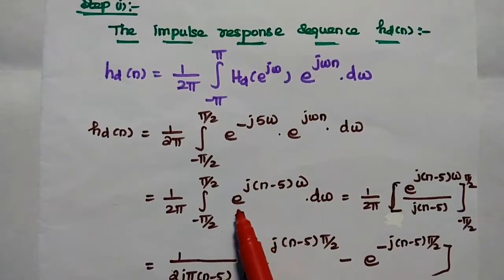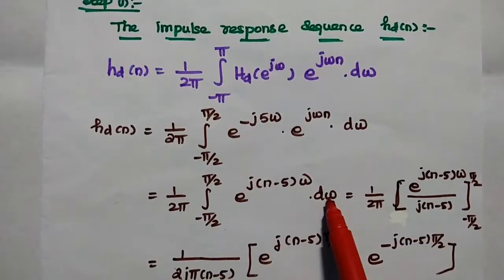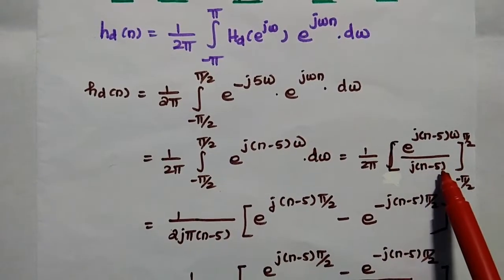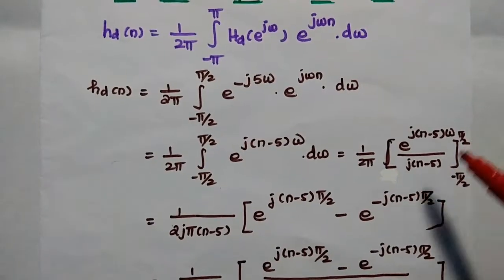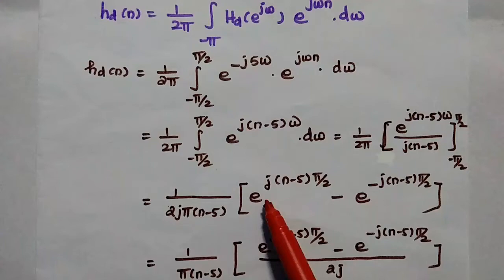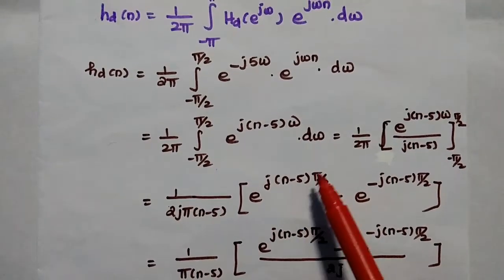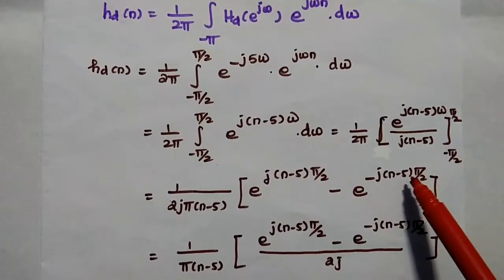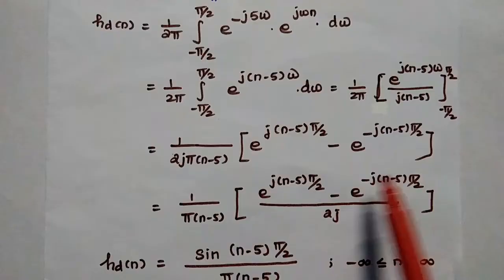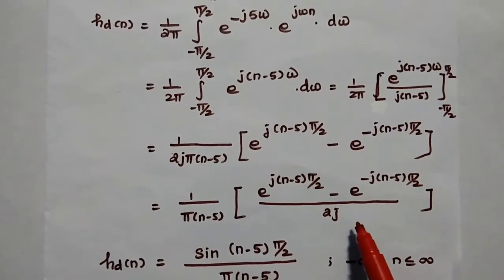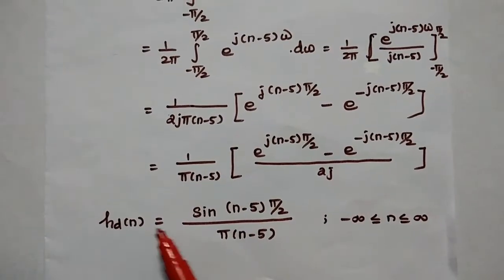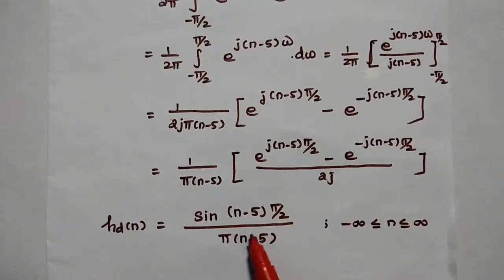Since j and ω terms are the same, we can take them outside. The exponential term becomes e^(j(n−5)ω) dω. Integrating with respect to ω gives (1/2π) × e^(j(n−5)ω) / (j(n−5)), with limits from −π/2 to +π/2. Taking j(n−5) outside gives (1/2j π(n−5)) × [e^(j(n−5)π/2) − e^(−j(n−5)π/2)]. This matches the form (e^(jθ) − e^(−jθ))/2j = sin θ, so hd(n) = sin((n−5)π/2) / (π(n−5)).